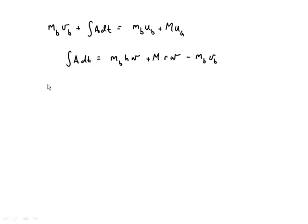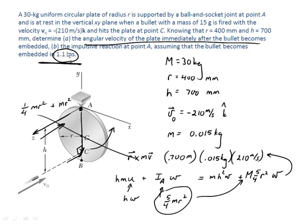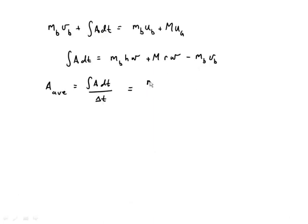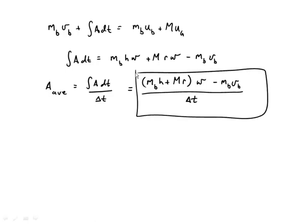The average force at point A equals the integral of A DT divided by the time period of the collision. That was a given value — 1.1 milliseconds. So this equals the mass of the bullet times H, plus the mass of the plate times R, all times omega (which we know from the angular momentum solution), minus the mass of the bullet times velocity of the bullet before the collision, all over delta t. Everything on the right-hand side is either given or previously solved.